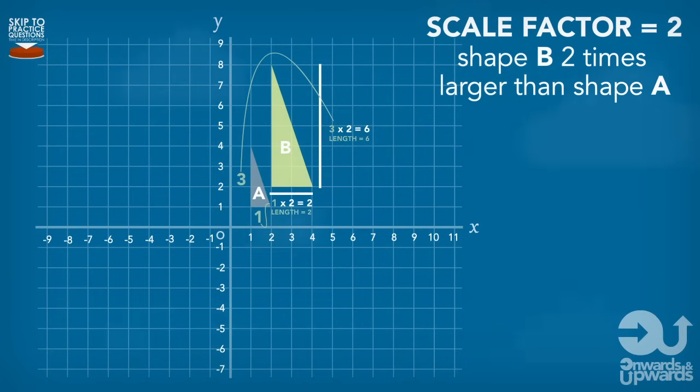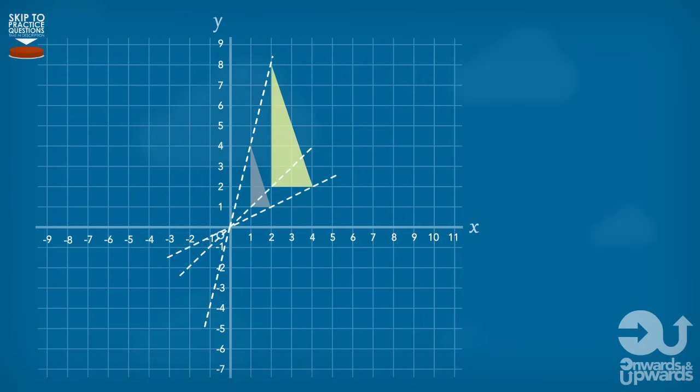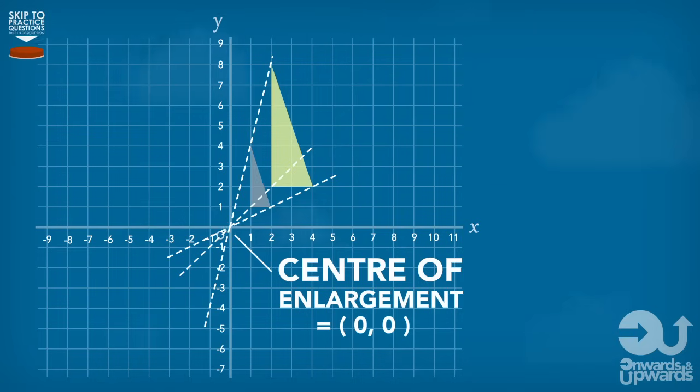Now, going back to the centre of enlargement, this is basically the point where the shape is enlarged from. It also acts as a point where the original and second shape align. The centre of enlargement is always given a coordinate so we know where it is. To find the centre of enlargement, in an example where we don't know it, the first thing we need to do is join up all the corresponding corners with straight lines. As you can see, there is a point where all the lines intersect and cross over. And as you've guessed it, this is our centre of enlargement.